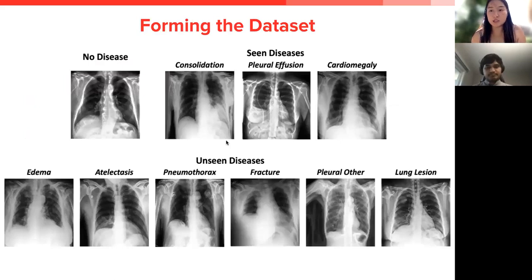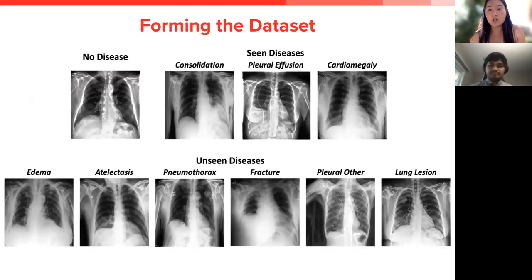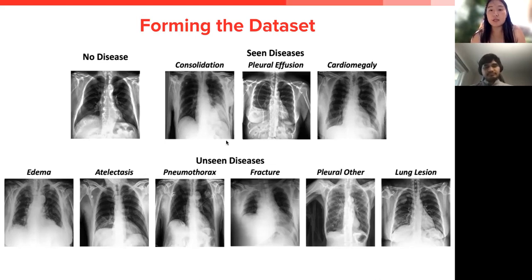To answer these questions, we formatted a dataset as follows. We adopted the CheXpert dataset, which has the following labels, and then we subset them into either seen diseases or unseen diseases. The seen diseases included consolidation, pleural effusion, and cardiomegaly. The unseen diseases included edema, atelectasis, hemothorax, fracture, pleural other, and lung lesion. The decision on whether a disease is seen or unseen in our experimental setup is based on the dataset itself as well as the nature of the diseases.